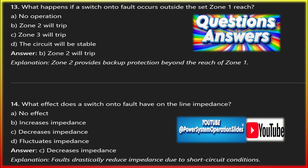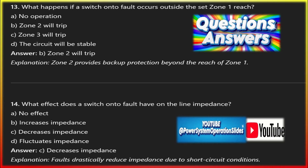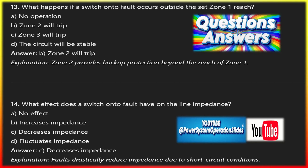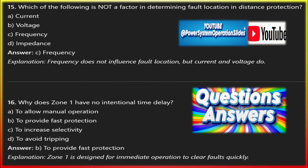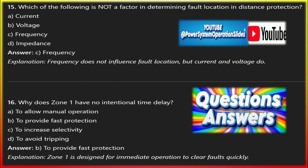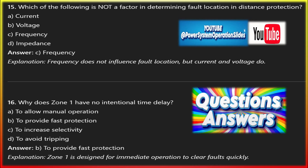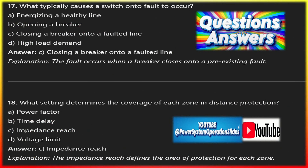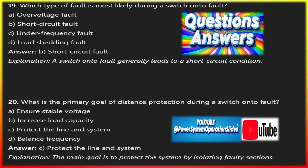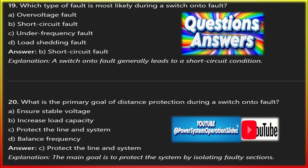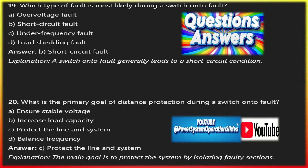In systems with transformers or large motors, high inrush currents can occur during breaker closing even when no fault is present. The SOTF logic must be designed to avoid false tripping due to inrush current, which decays quickly — unlike fault current. In the REL670, settings for the SOTF function are carefully configured to ensure proper operation. Voltage thresholds: the relay uses voltage supervision under-voltage settings to identify if the line is energized or de-energized before closing; if the voltage is below the set threshold, SOTF logic is enabled. Current thresholds: the current detection element is configured to recognize fault current immediately after breaker closure.